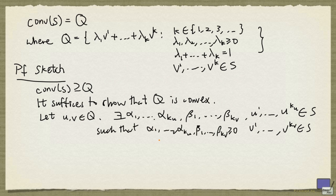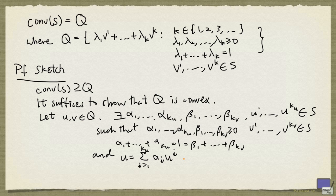and V1 up to Vkv in S, such that all the alphas and betas are non-negative. The sum of the alphas is 1, and the sum of the betas is also 1. And U is given by α1 times u1 all the way to αku times uku, and V is given by β1 v1 plus all the way to βkv vkv.